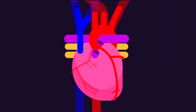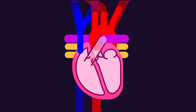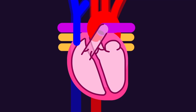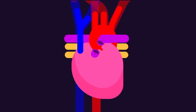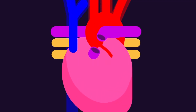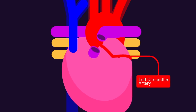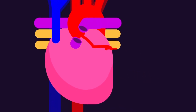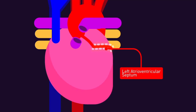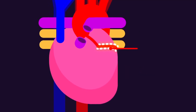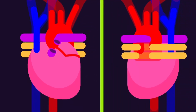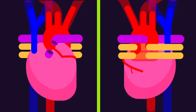The left coronary artery, LCA, will distribute blood to the left side of the heart, which includes the left atrium, left ventricle, and the interventricular septum. The first major branch of the LCA is the left circumflex artery, which travels and supplies blood to the left side of the heart muscles, also known as the left atrioventricular groove. The name circumflex suggests it goes around in the groove towards the posterior surface of the heart.